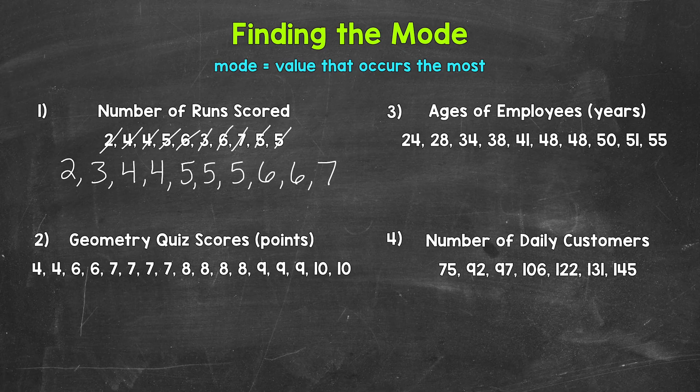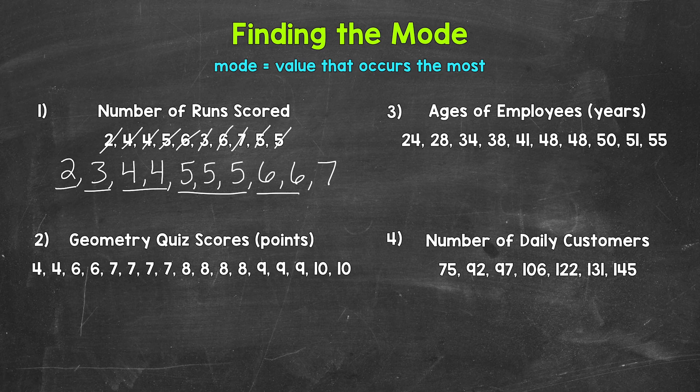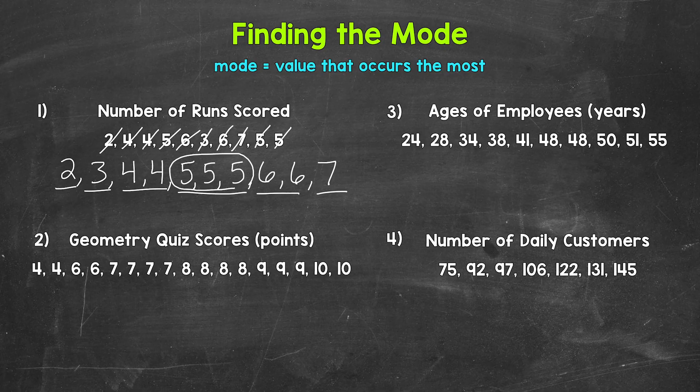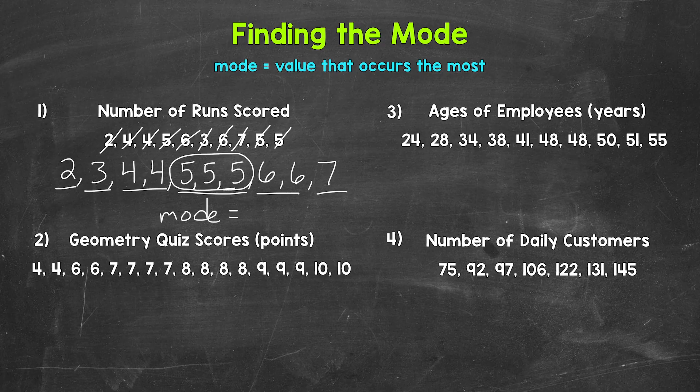So which value, which number of runs occurs the most? Well, 2 occurred once, 3 occurred once, 4 occurred twice, 5 occurred 3 times, 6 occurred twice, and 7 occurred once. So 5 runs occurred 3 times, which was the most. So the mode is 5 runs.